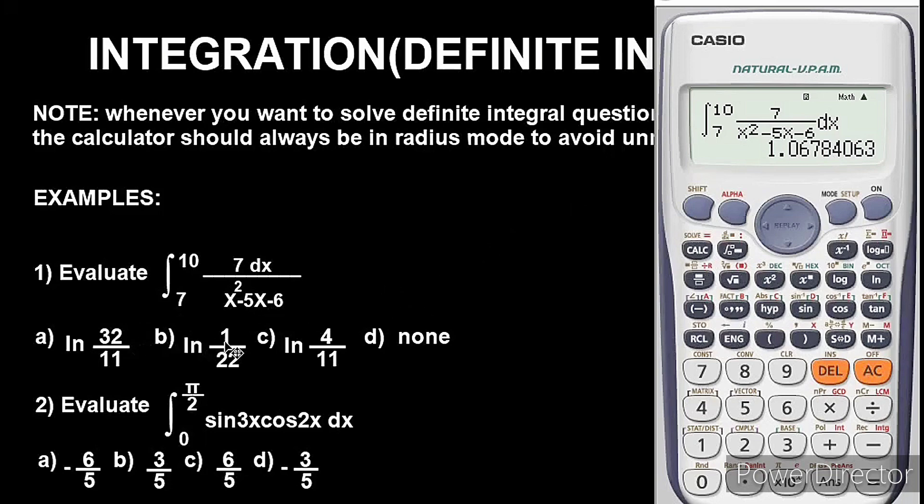We have here to put them in decimal places in order to know the right option. So right now let's start with option a. It says ln 32 over 11. So look at ln button, it is in fraction, we have 32 over 11. We close the brackets.